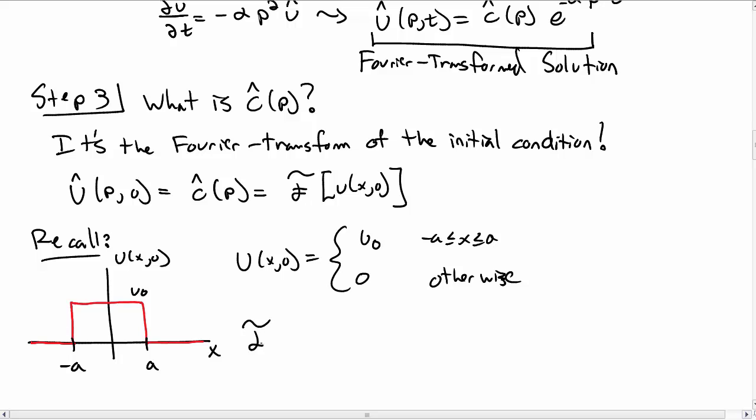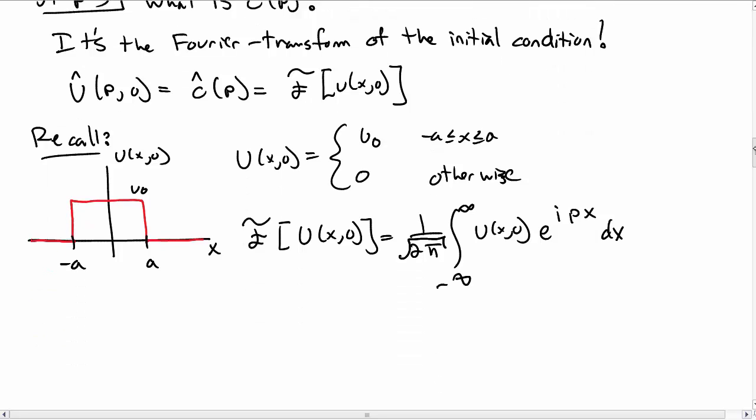So we need to Fourier transform this initial condition. So we take one over root pi, negative infinity to infinity, u at x comma zero, e to the i px dx. And so we have to take the Fourier transform of this step function.